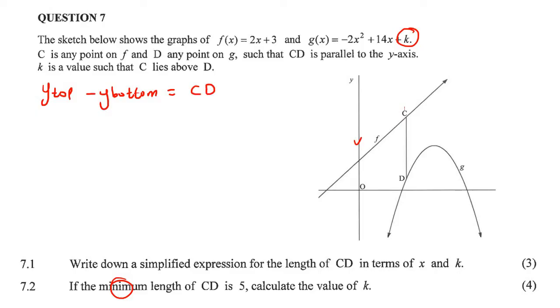And then you make that equal to the length of CD. So what do I mean? Well, the top is the straight line. Can you see the straight line is on the top? So you replace its y with 2x plus 3 minus, and now we just put the bottom graph, which is this one, but it must go in brackets because we are subtracting, and then you make that equal to CD.